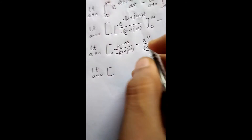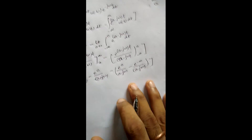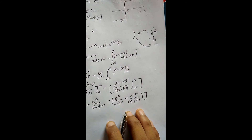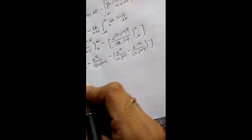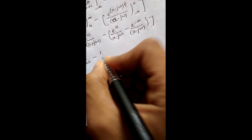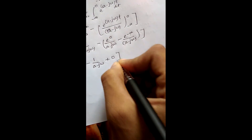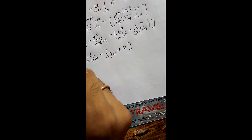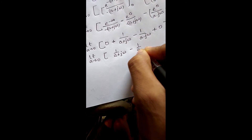At the upper limit, e to the power minus infinity equals 1 over e to the power infinity, which becomes 0. Putting t equal to 0, e to the power 0 equals 1. So applying this, the terms with e to the power minus infinity become 0, and we are left with minus e to the power 0 divided by minus (a plus jω), which gives plus 1 over (a plus jω), minus 1 over (a minus jω). Taking the limit as a tends to 0 gives 1 over (a plus jω) minus 1 over (a minus jω).